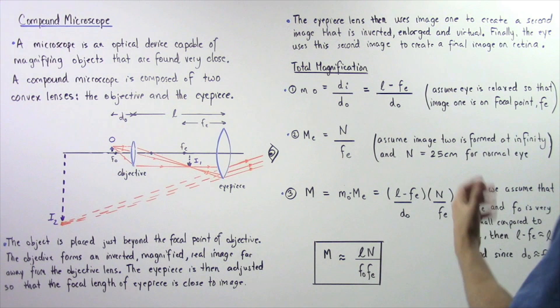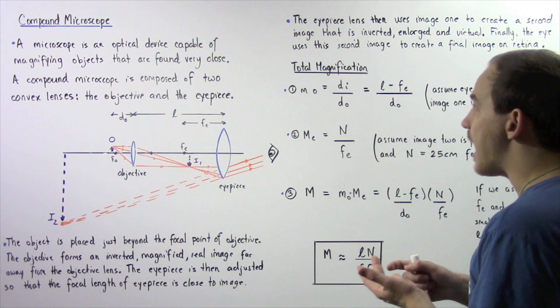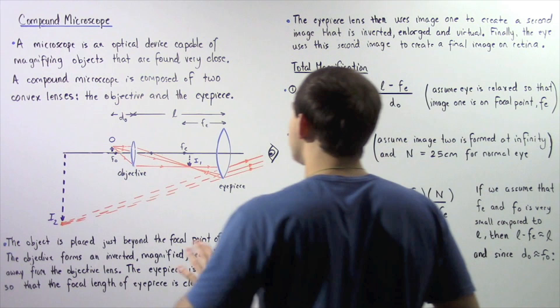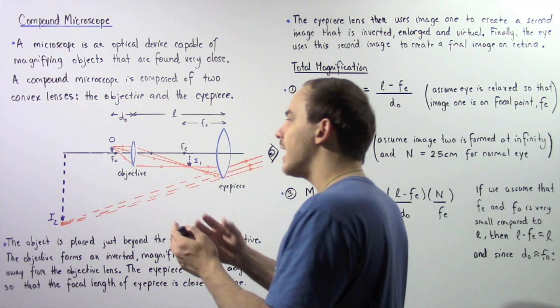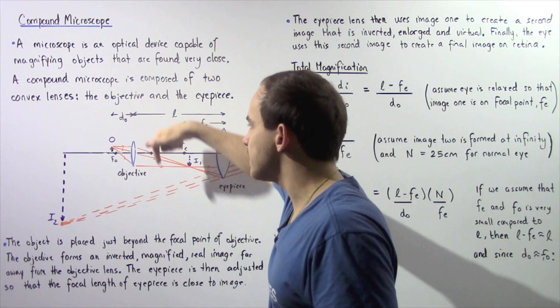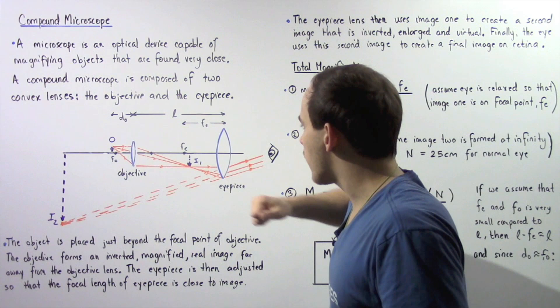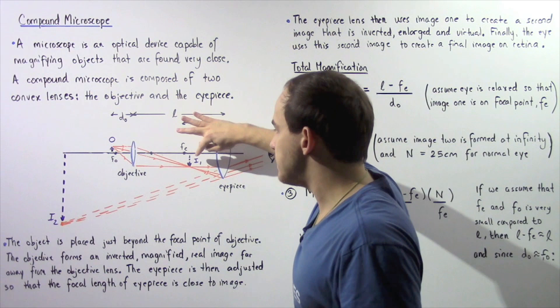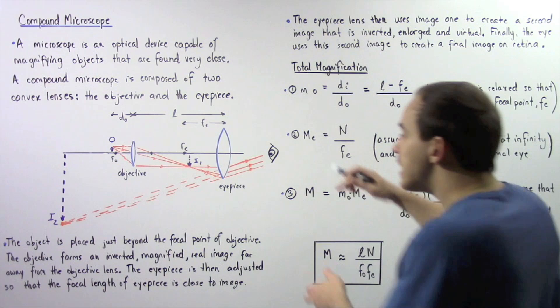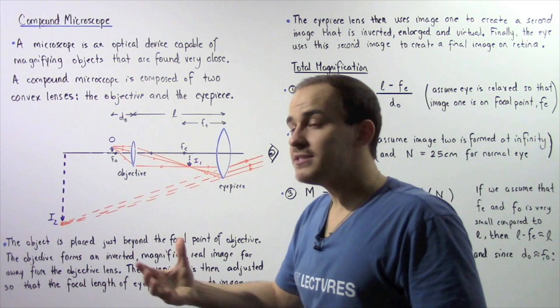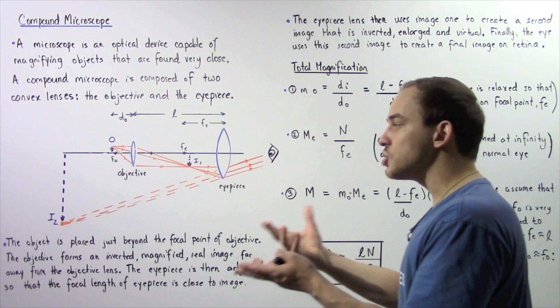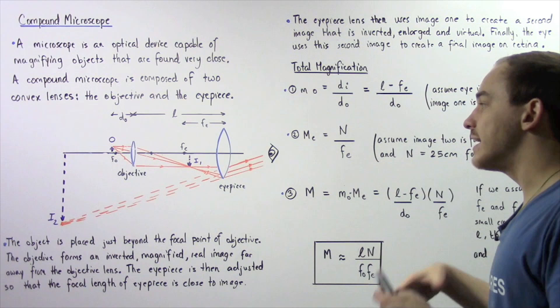The eyepiece lens then uses image one to create a second image that is virtual, magnified, and enlarged, found all the way to the left side of the objective lens. It's virtual because it's on the same side as where light is coming from, inverted because it points down compared to the upward direction of the object, and much enlarged. The eye then treats this second image as the actual object and creates the final image on the retina.